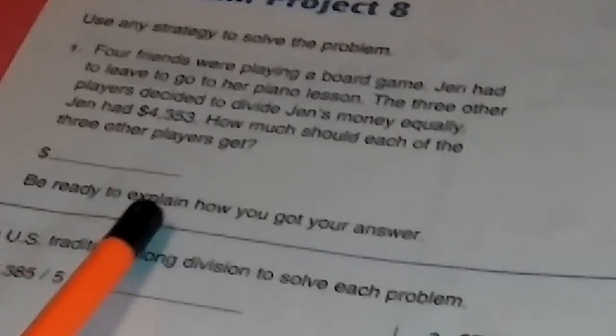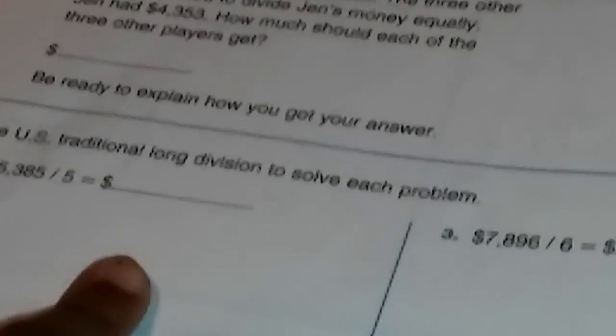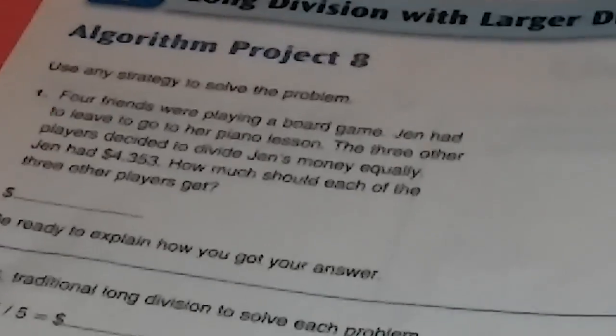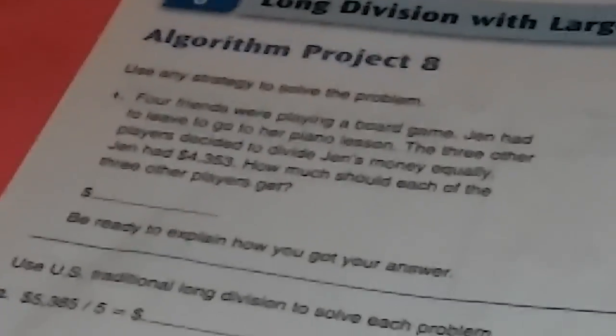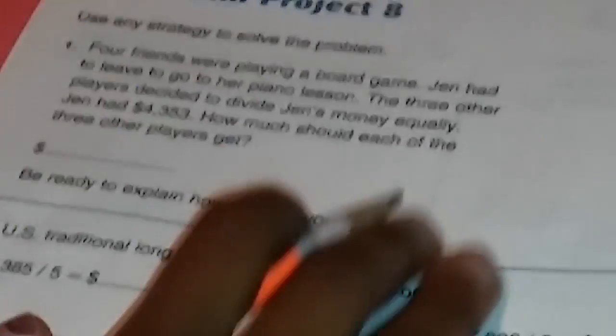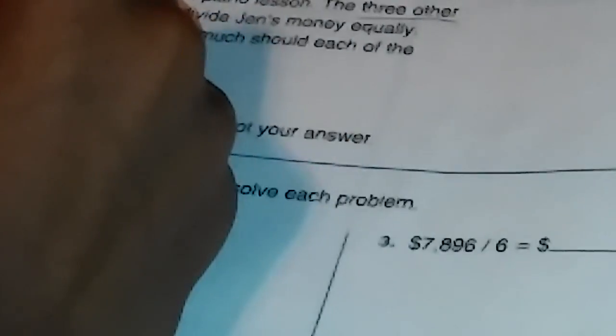Be ready to explain how you got your answer. So, we have number two. Oh wait, number one is right here. We already read all that. So, we're going to underline three other players because it's talking about three players. So we would put three. And then, we should underline 4,353.